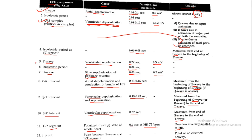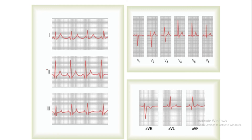The electrocardiogram consists of 12 leads. Three are bipolar limb leads: lead 1, lead 2, and lead 3. Three are unipolar limb leads: AVR, AVL, and AVF. And six are unipolar chest leads: V1, V2, V3, V4, V5, and V6.